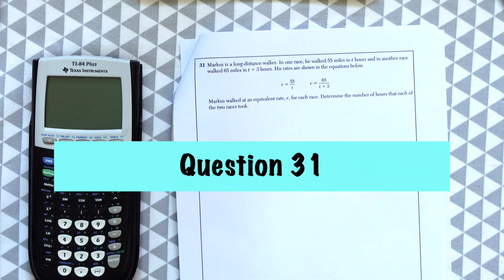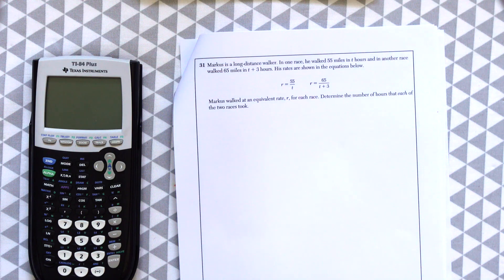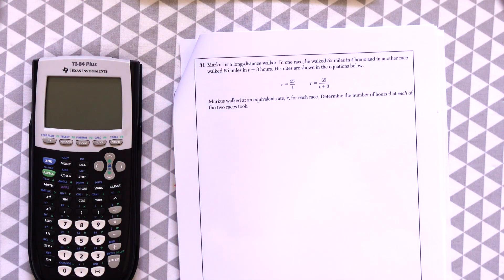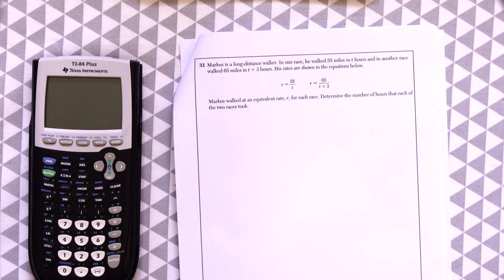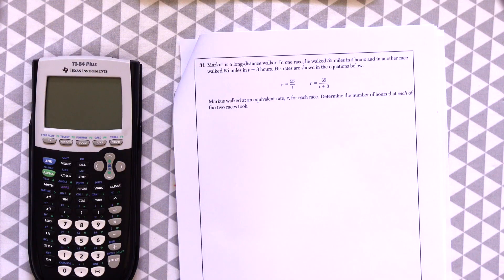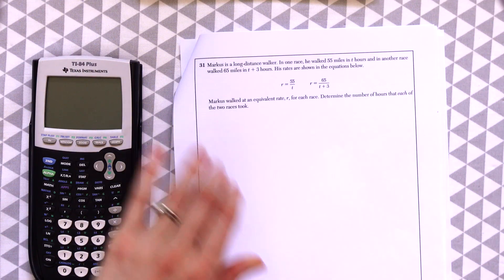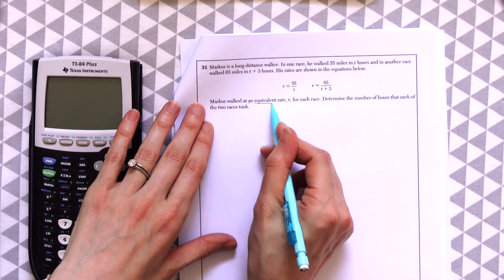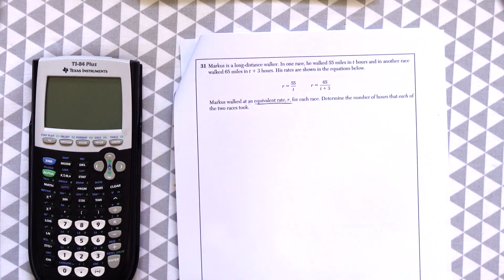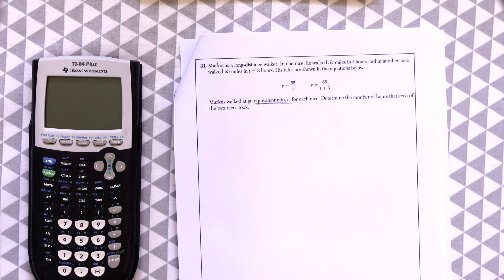Question 31. Marcus is a long distance walker. In one race, he walked 55 miles in t hours, and another race walked 65 miles in t plus 3 hours. His rates are shown below in each equation. Marcus walked at an equivalent rate r for each race. So this is a key point, equivalent r for each race. Determine the number of hours that each of the two races took.